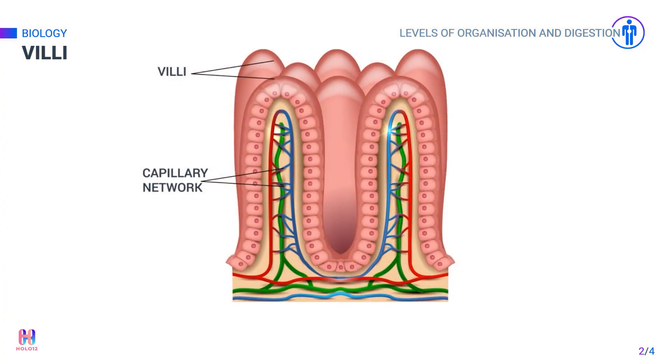The villi contain a rich network of blood capillaries. The digested food molecules move from the small intestine into these capillaries.